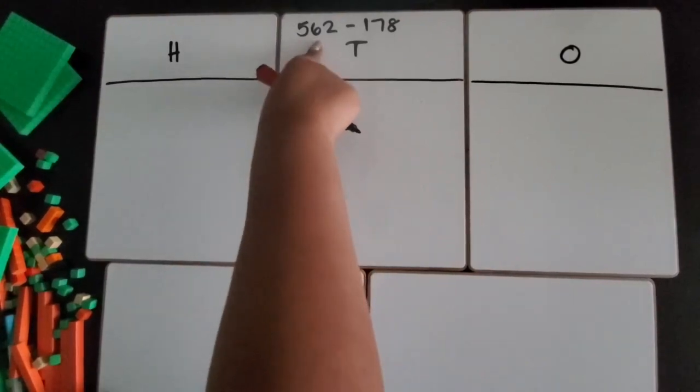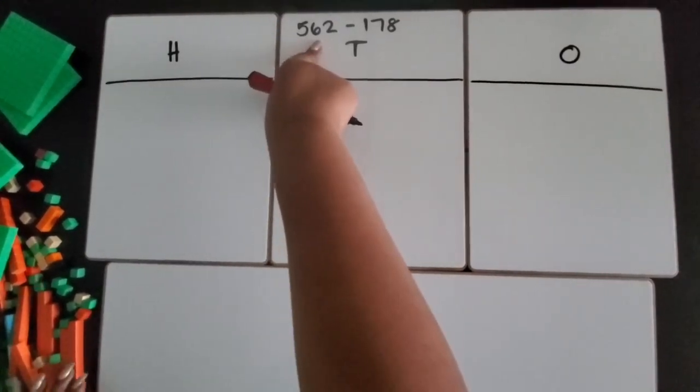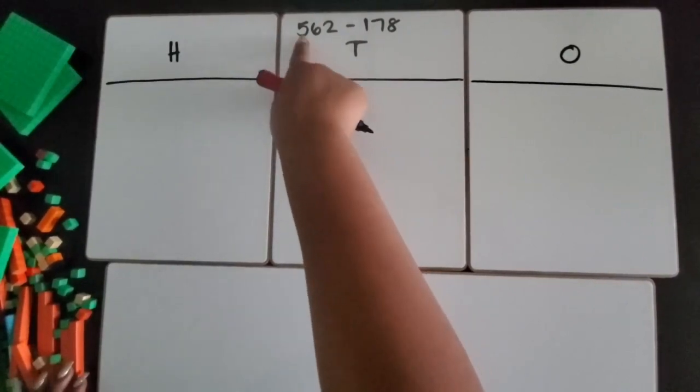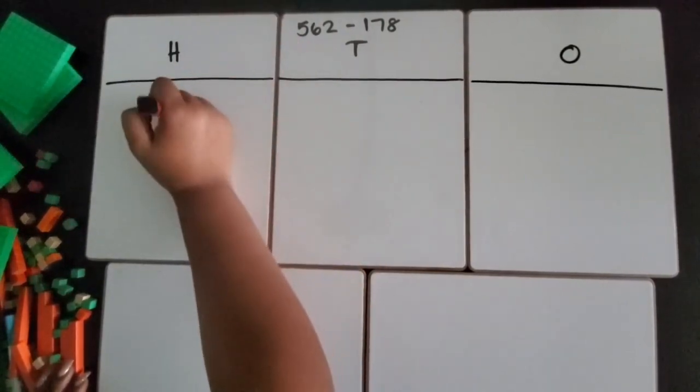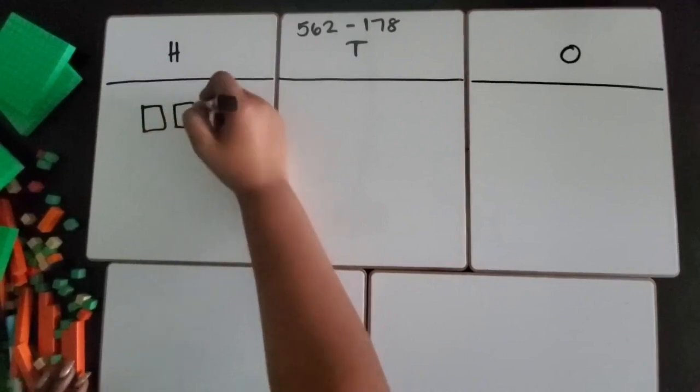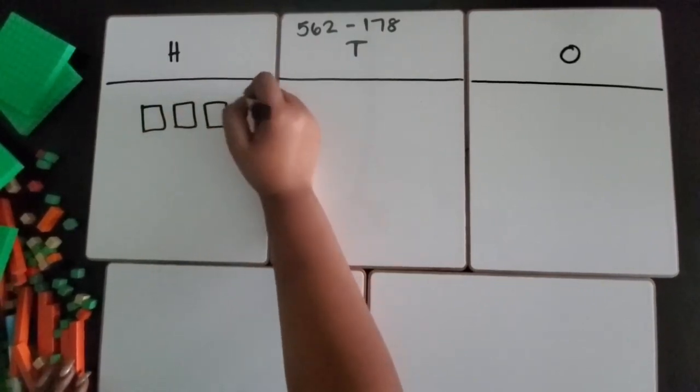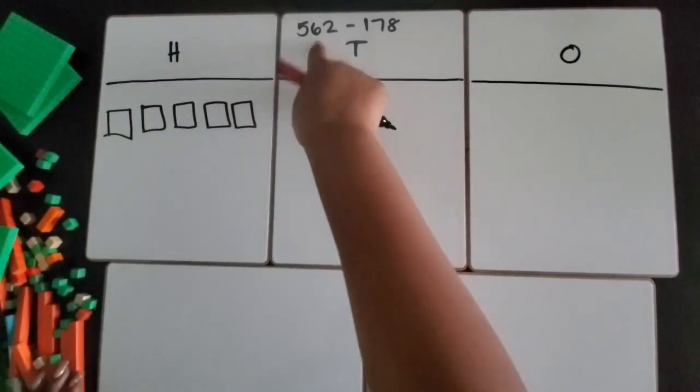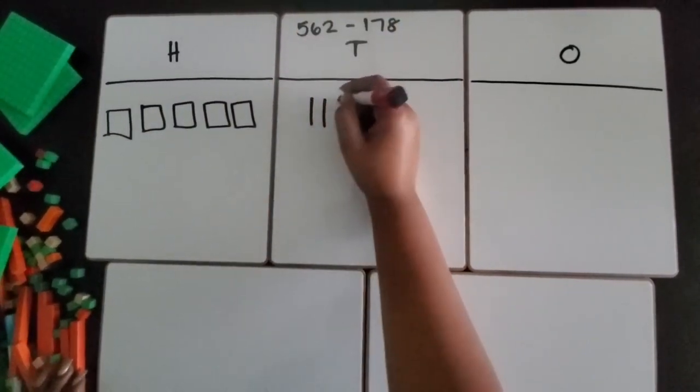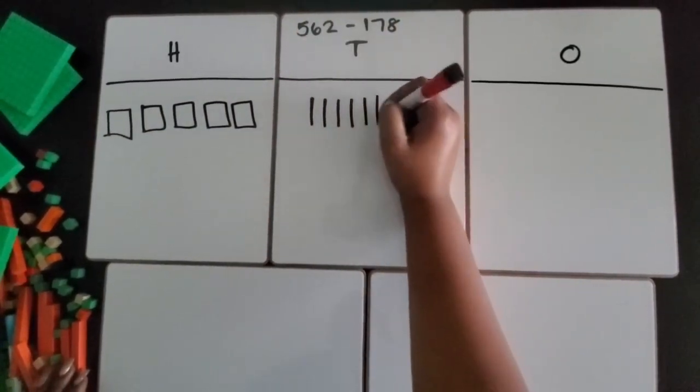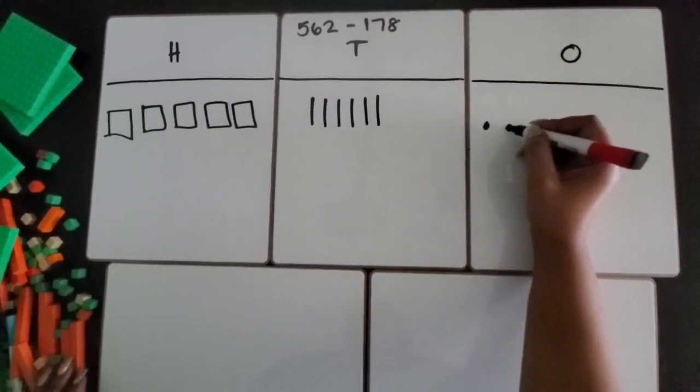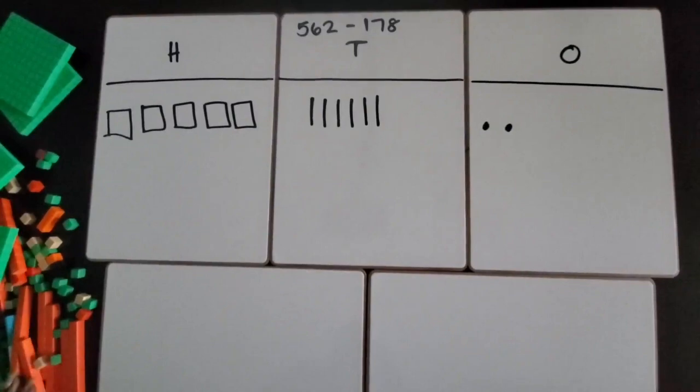So I'm going to start by building the first number, the larger number, 562. 562 has 500, so I'm going to draw 5 squares to represent the 100s. It has 6 tens. I'm going to draw 6 tally marks to represent the 10s, and it has 2 ones. I'm going to draw 2 dots to represent my ones.